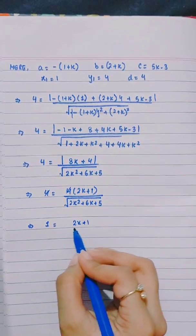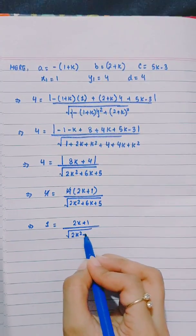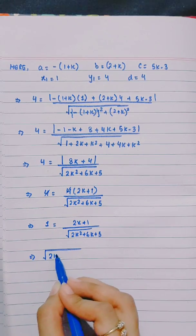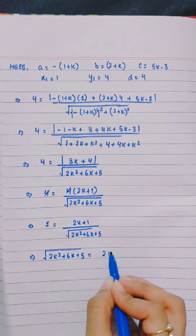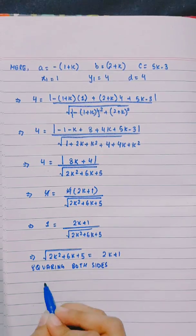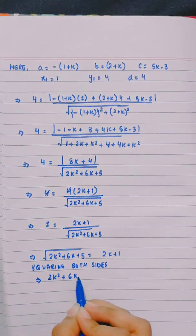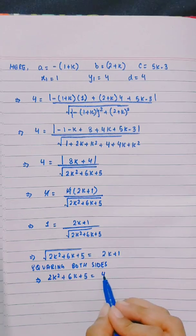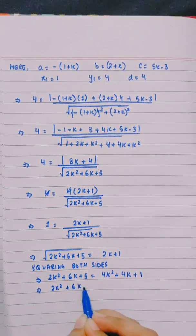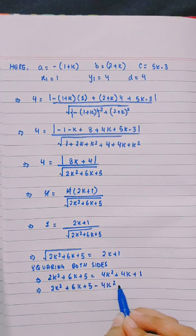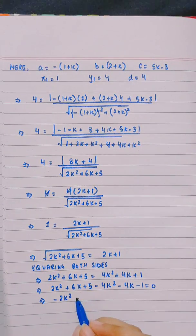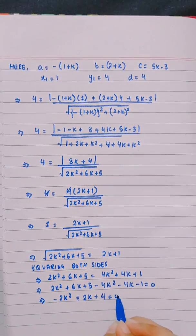So 1 equals (2k plus 1) divided by the square root of 2k squared plus 6k plus 5. Cross-multiplying and squaring both sides, the square root cancels to give: 2k squared plus 6k plus 5 equals 4k squared plus 4k plus 1. Rearranging: 2k squared plus 6k plus 5 minus 4k squared minus 4k minus 1 equals 0, which gives minus 2k squared plus 2k plus 4 equals 0.